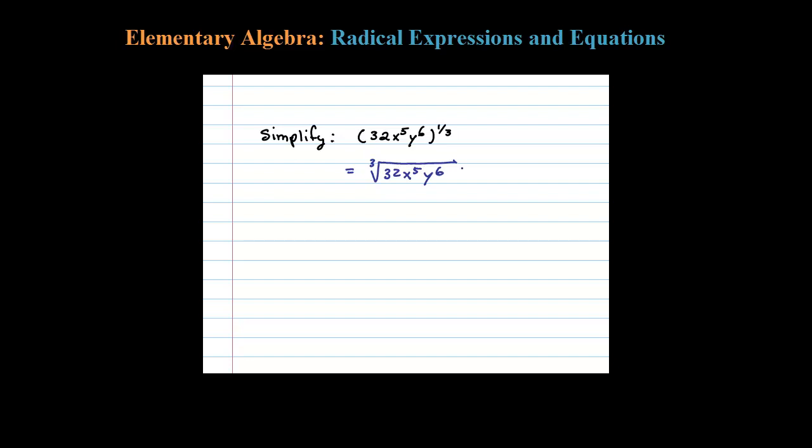Now it's easier to work with these when you put your coefficient in its prime factored form. So 32 is 2 to the fifth, times x to the fifth y to the sixth.